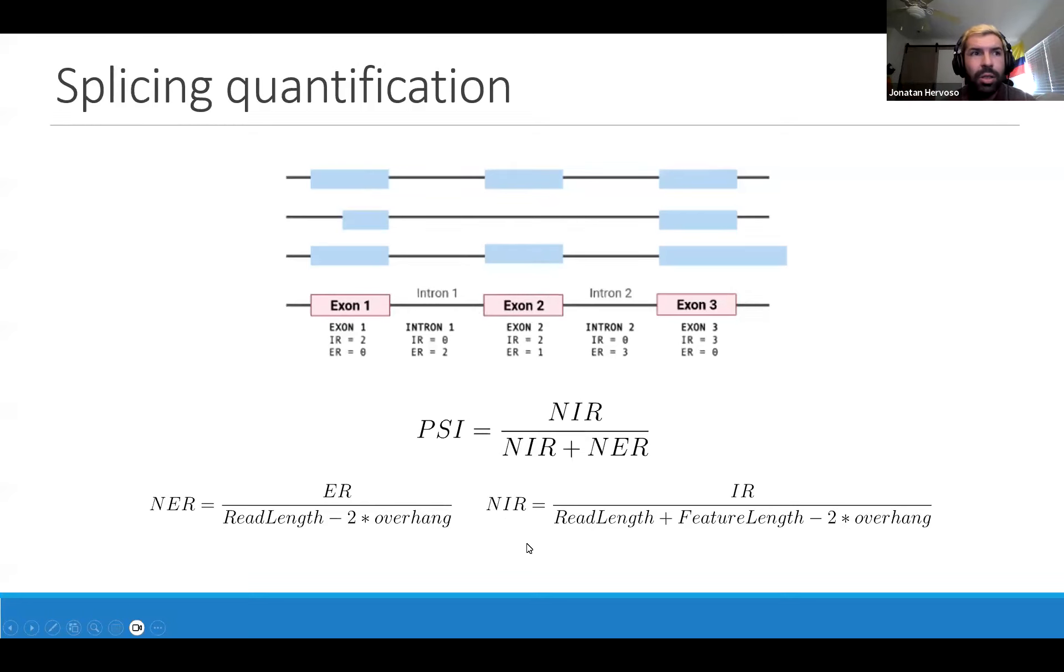Taking these inclusion reads and exclusion reads, we can take a ratio. The ratio would be your inclusion reads divided by the total sum of your inclusion reads and your exclusion reads. This gives you a value between 0 and 1 that tells you the percentage amount of time your exon is being spliced into the transcript population of a specific gene.